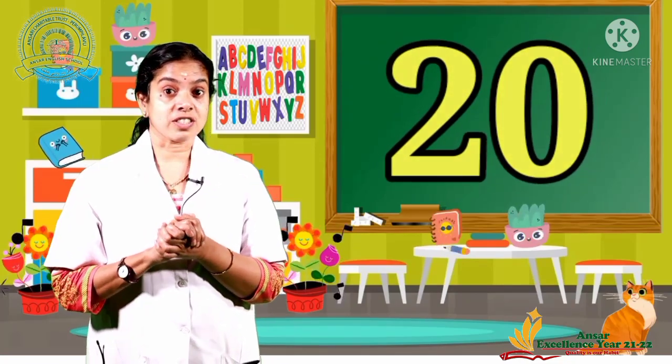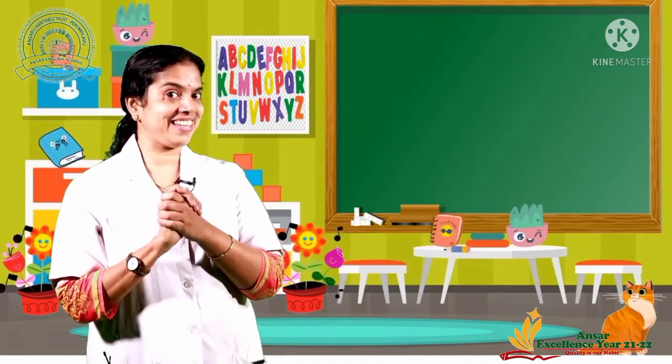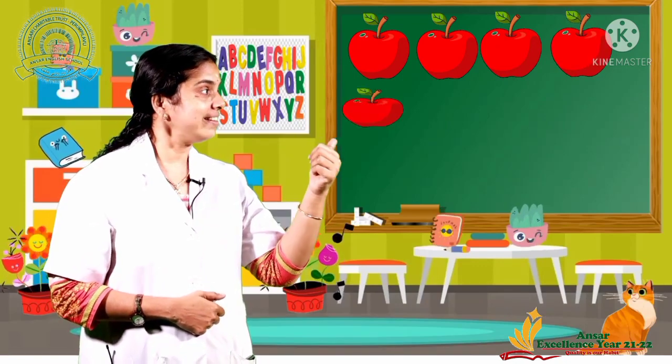Now the next number is 20. Let's count the number of apples. Okay, are you ready? Yes. 1, 2, 3, 4, 5, 6, 7, 8, 9, 10, 11, 12, 13, 14, 15, 16, 17, 18, 19, 20.